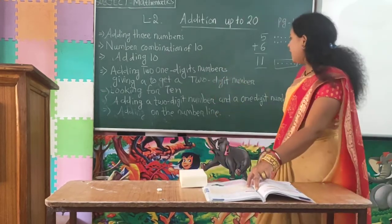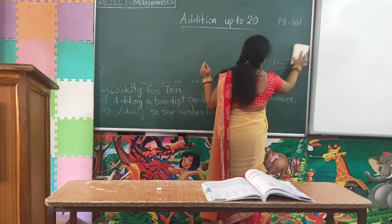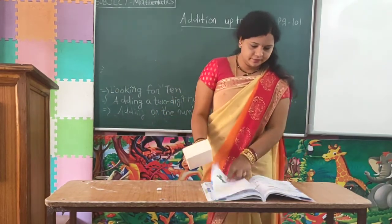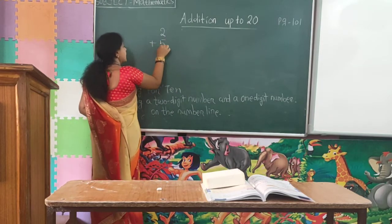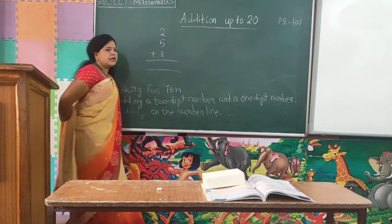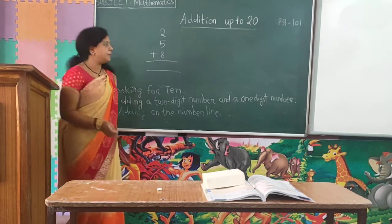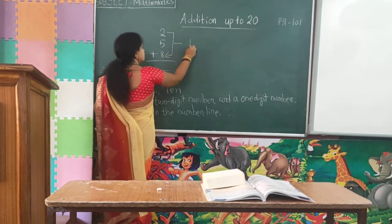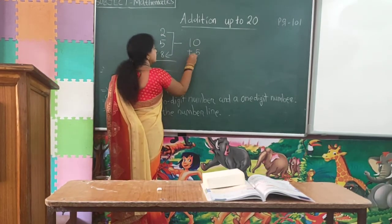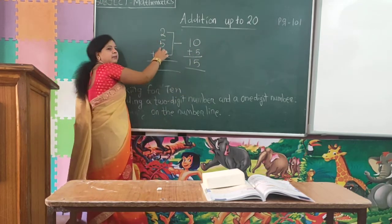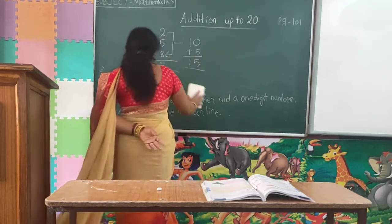Next we will learn about looking for 10. For example, given here: 2 plus 5 plus 8. First you have to look for 10 — which 2 numbers when added give the answer 10. Here, 2 and 8 added together gives 10. Then with this 10 you add 5. So 10 plus 5 is equal to 15. Therefore 2 plus 5 plus 8 is equal to 15. You have to group numbers to make 10 first.